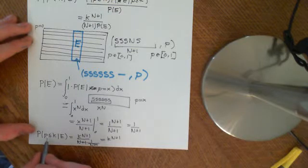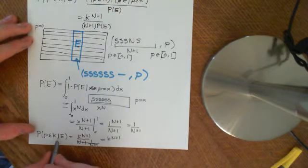So that is the probability that P is less than or equal to K, given that E occurs.